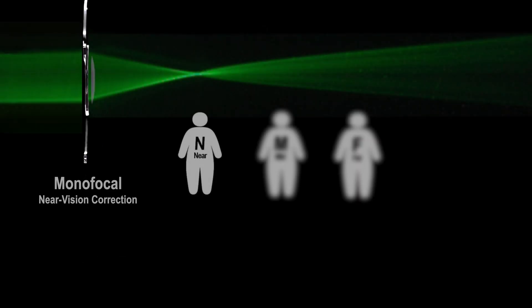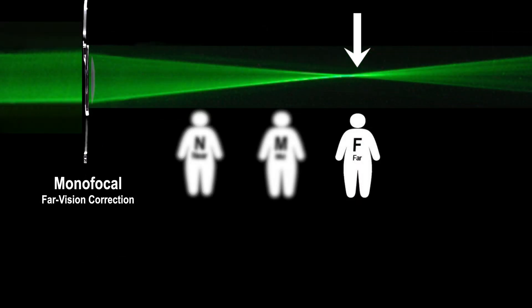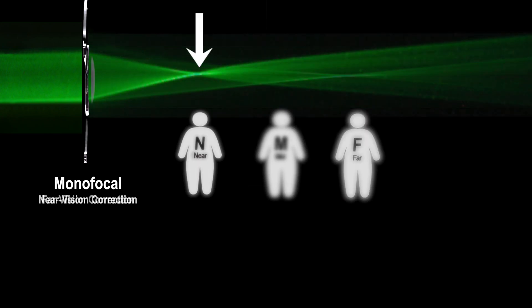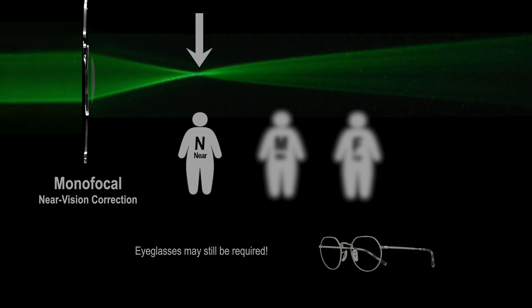Monofocal intraocular lens is the default choice for most standard cataract surgeries. This lens type allows for a single vision correction which can correct either near vision or far distance vision, but not both. Although visual clarity is improved, one will still need to wear eyeglasses after surgery to address either near or far vision depending on what focal length option was picked.